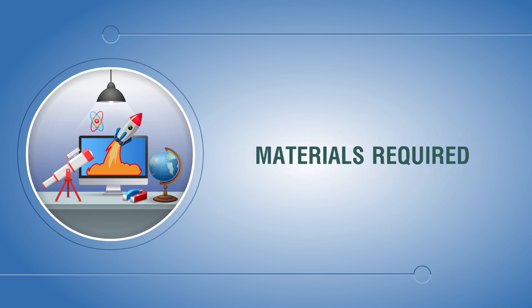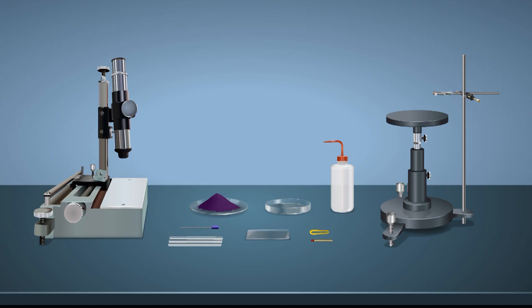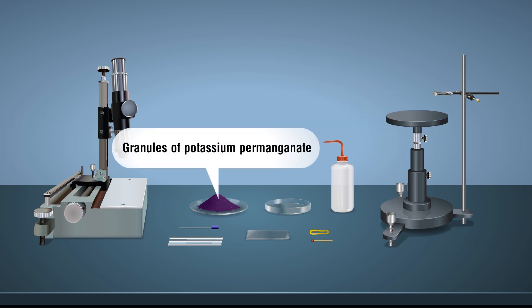Materials required: cleaned and dry two slides, rubber band, matchstick, petri dish, distilled water, granules of potassium permanganate, capillary tubes of different radius, clamps and stand, traveling microscope, pointer.